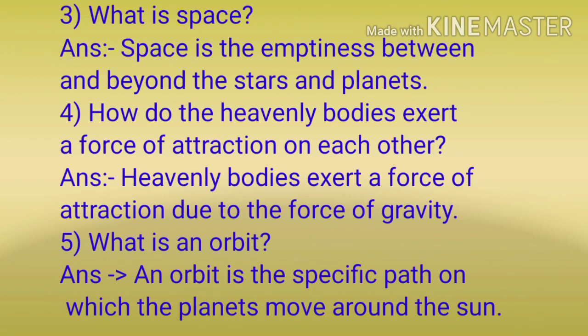Third: What is space? Answer: Space is the emptiness between and beyond the stars and planets. Fourth: How do heavenly bodies exert a force of attraction on each other? Answer: Heavenly bodies exert a force of attraction, i.e., the force of gravity. Fifth: What is an orbit? Answer: An orbit is a specific path on which planets move around the sun.